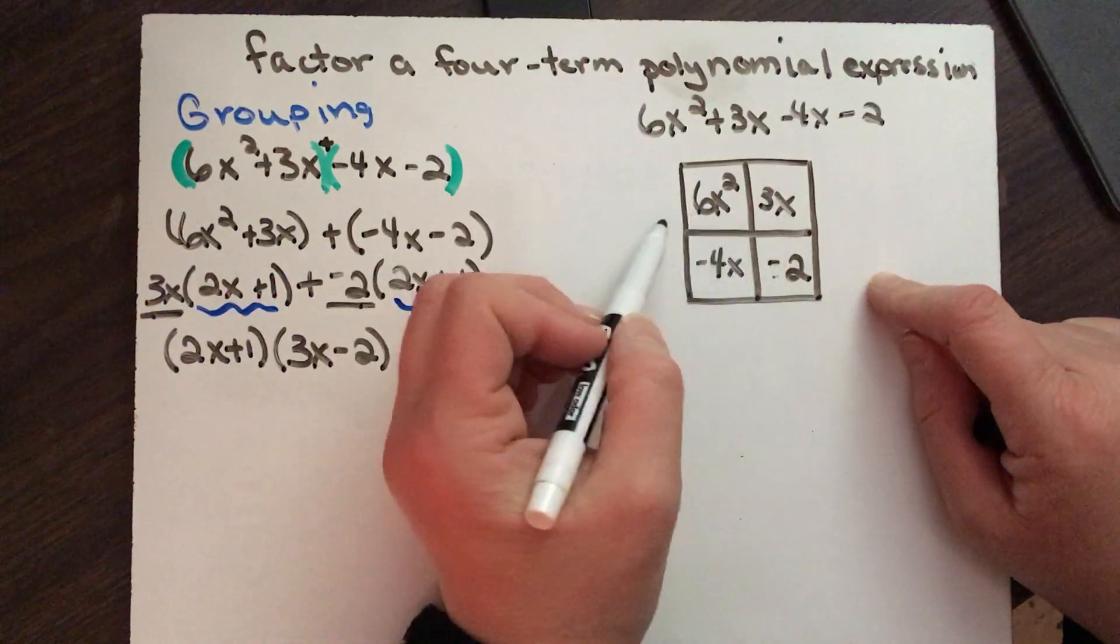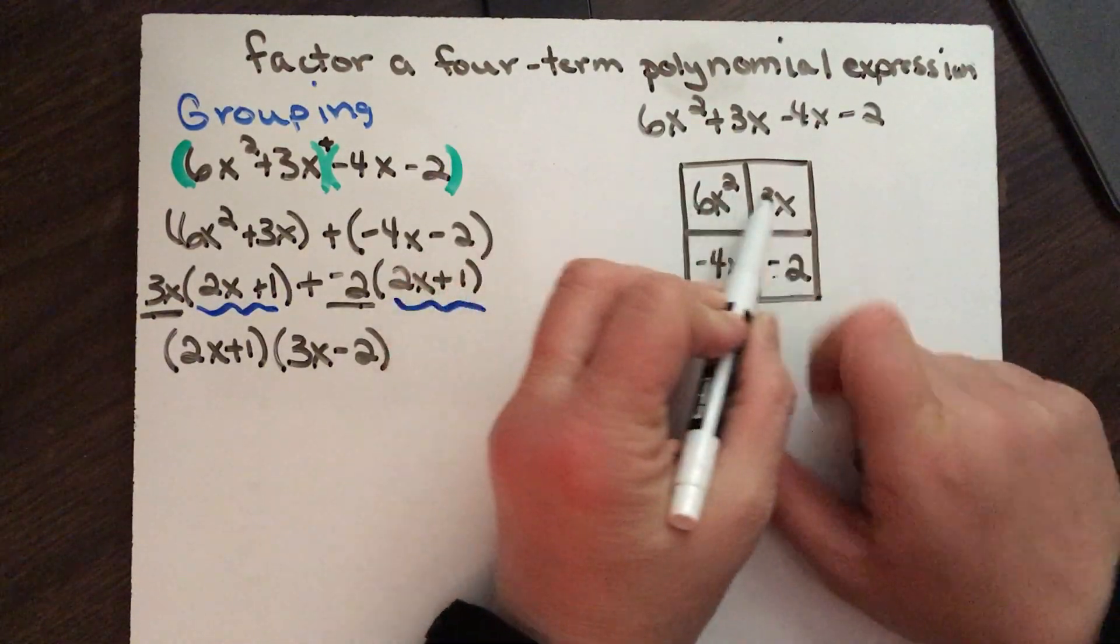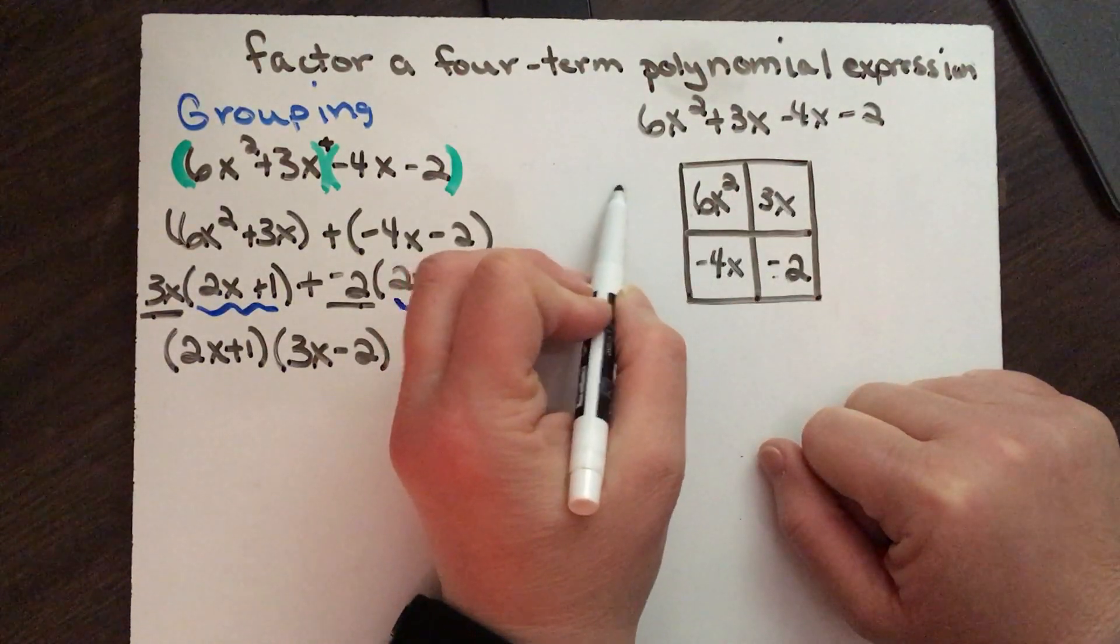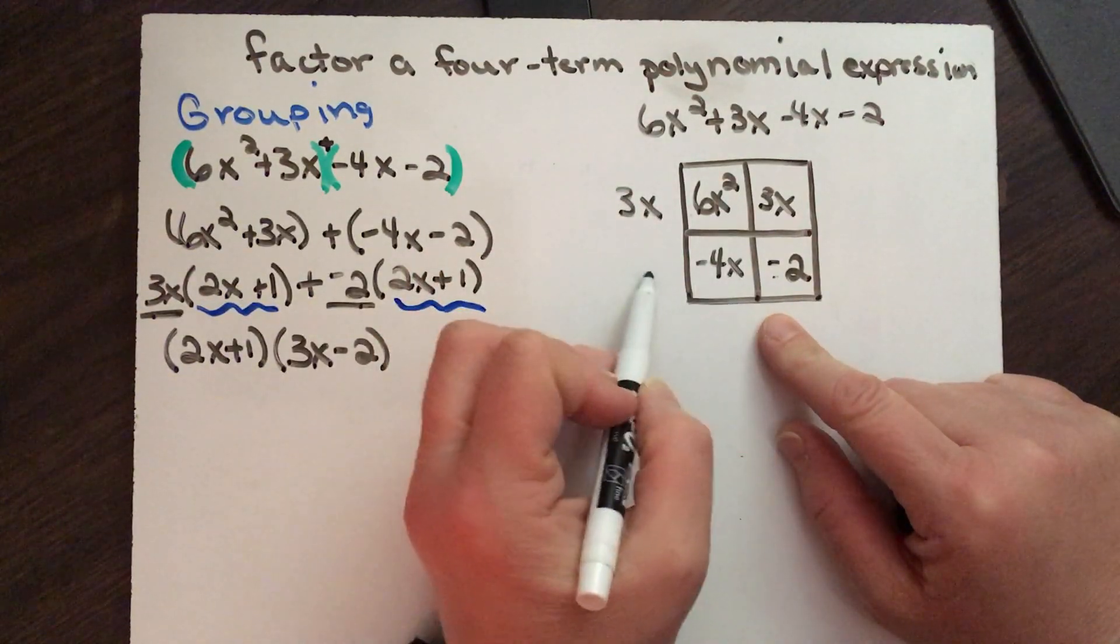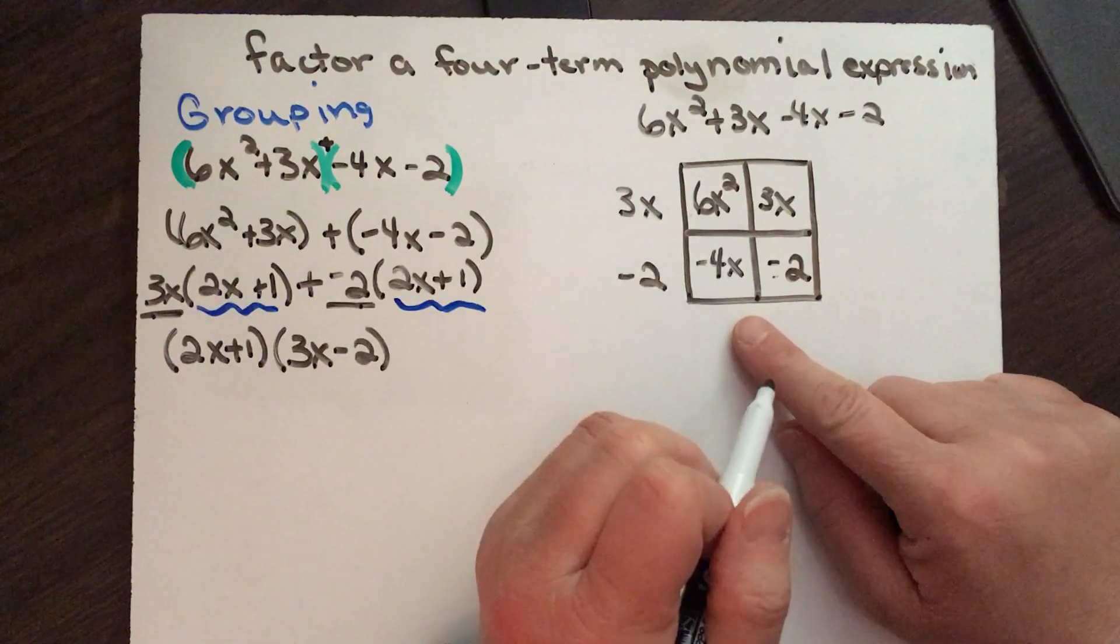Okay, so coming across I'm going to find the factors that they share in this direction. They share a 3 and they share an x, and down here they share a negative 2 and that's it.